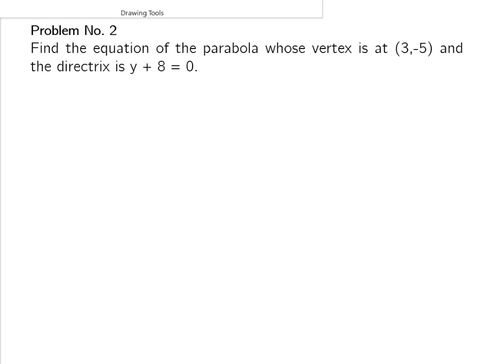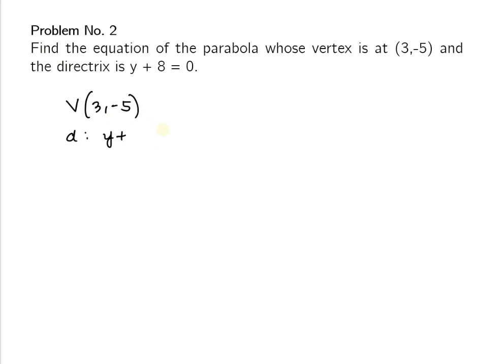Second problem: find the equation of the parabola whose vertex is at (3, -5) and the directrix is y + 8 = 0, which can be written as y = -8.